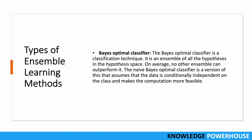In the Bayes optimal classifier, we perform classification as an ensemble of all the hypotheses in the hypothesis space, which means on average no other ensemble can outperform it. The Naive Bayes classifier is a version of this that assumes data is conditionally independent on the class, making computation more feasible. We collect output from multiple models across hyperparameters and combine them as the overall result.